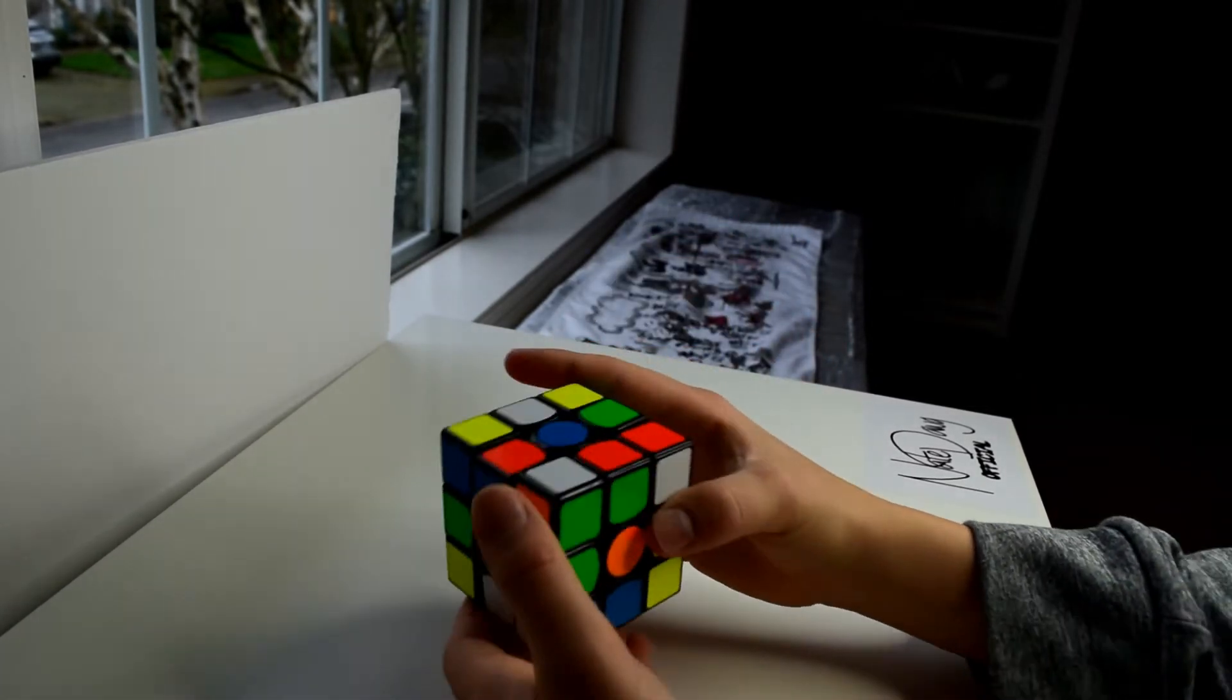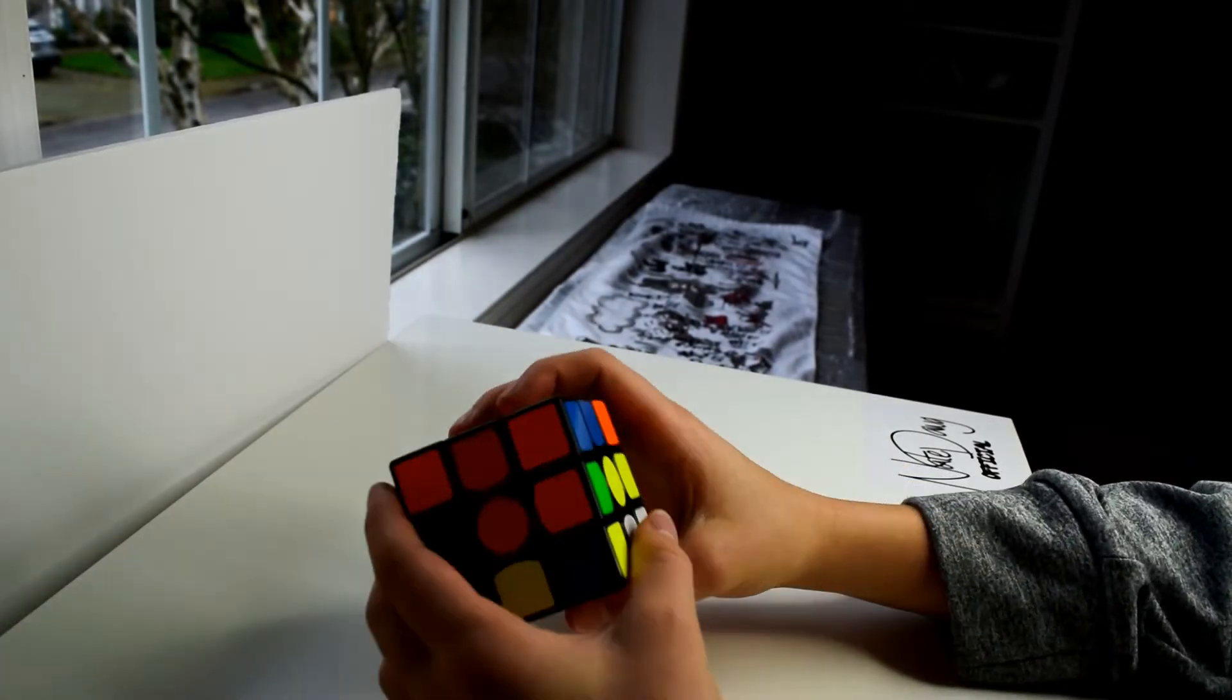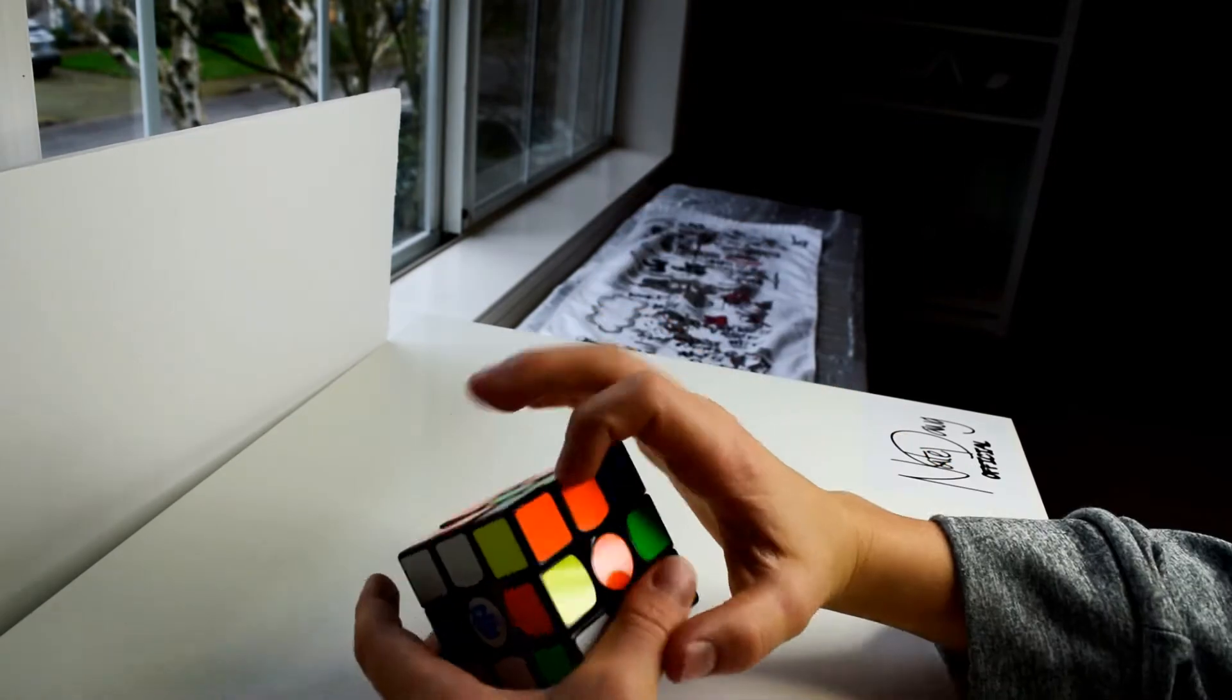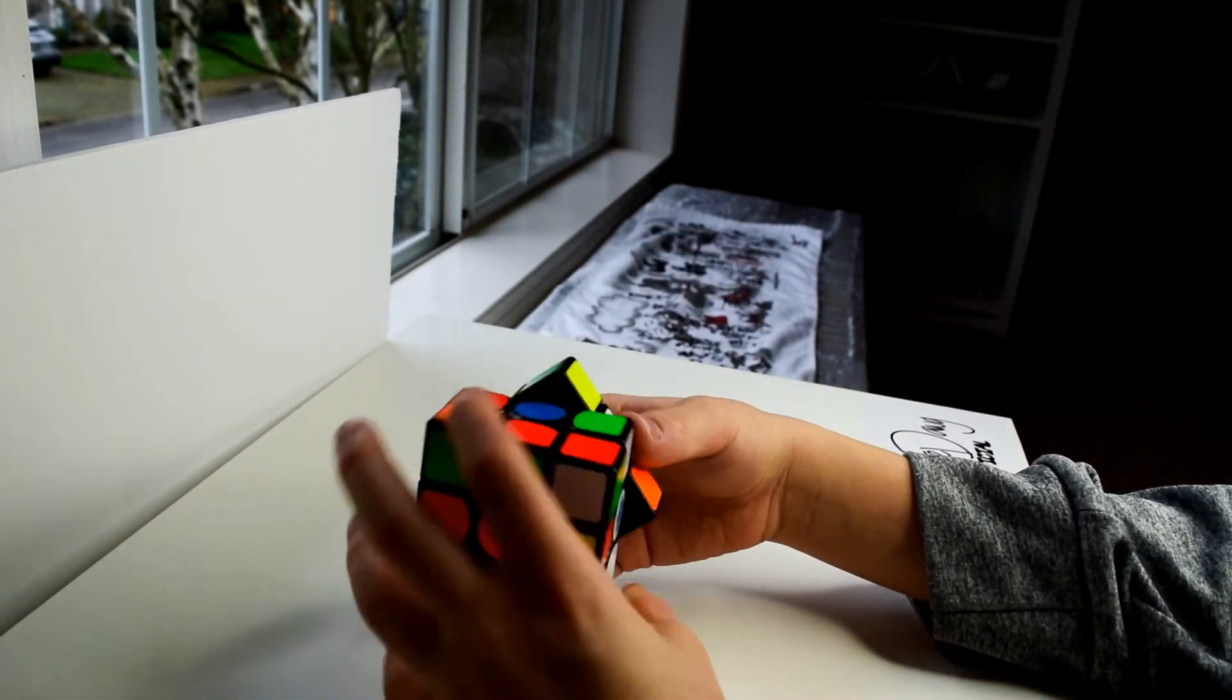So first off you want to choose a side. I'll just choose the green, and then you have to make a little cross and then line this color up with the center piece. And then just do that all the way around.